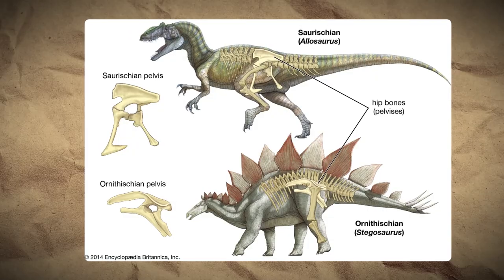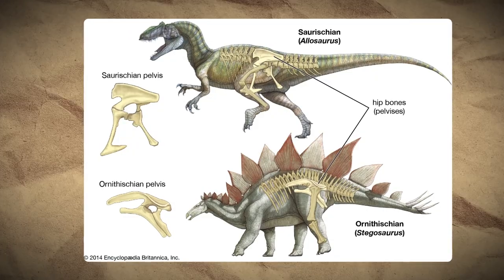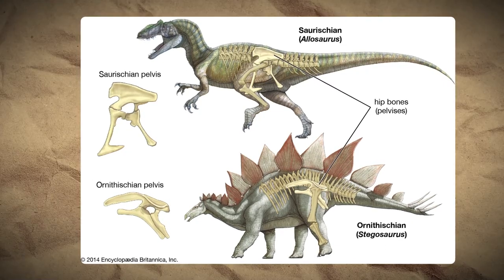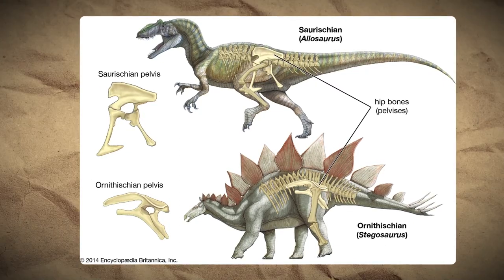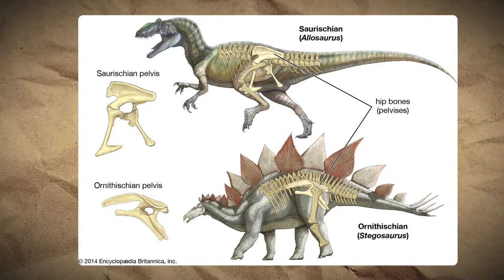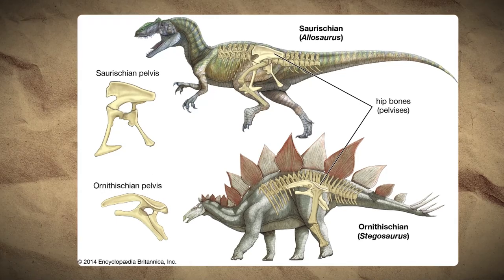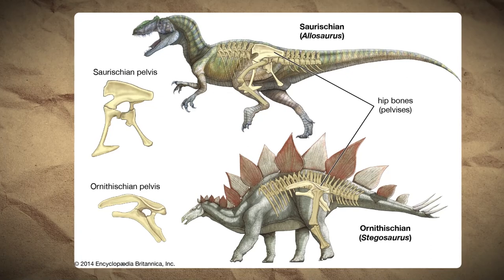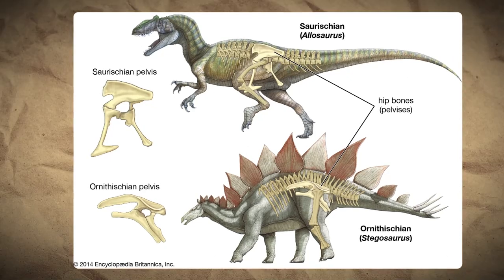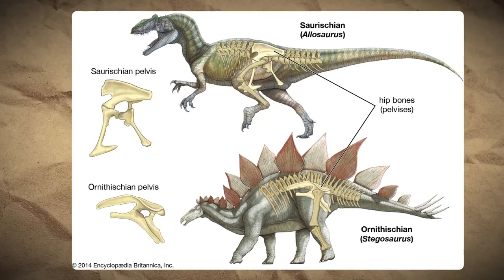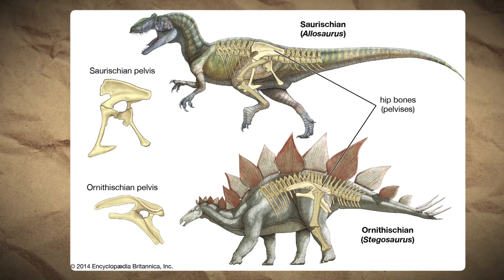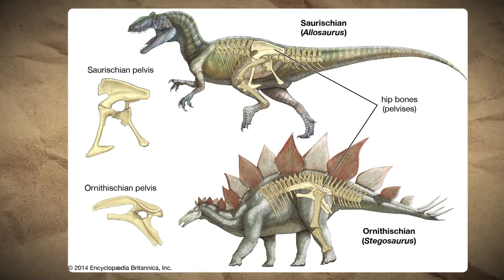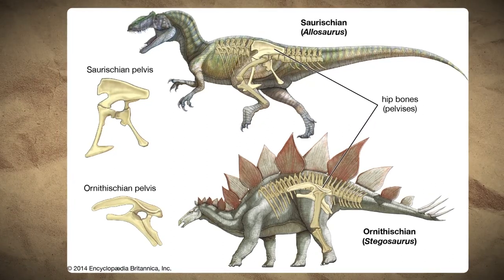From there, dinosaurs branched out into two major groups — Saurischia and Ornithischia — based on the shape and orientation of their hips. This grouping was proposed by British paleontologist Harry Seeley in 1887. In saurischian or lizard-hipped dinosaurs, such as the T. rex and Diplodocus, the pubic bone faced forward and down. In ornithischian or bird-hipped dinosaurs, such as Triceratops and Parasaurolophus, the pubis faced backwards and down.